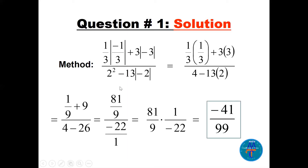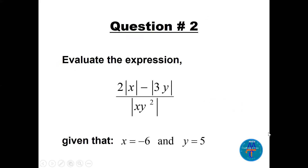In the denominator: 2² = 4, and 13 × |−2| = 13 × 2 = 26. By order of operations, multiply before subtracting: 4 − 26 = −22. The expression becomes (81/9) ÷ (−22), which equals 81/9 × (1/−22). The final answer to question 1 is −41/99.